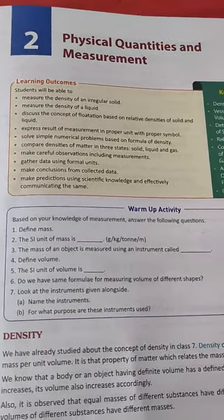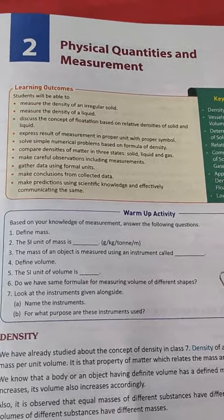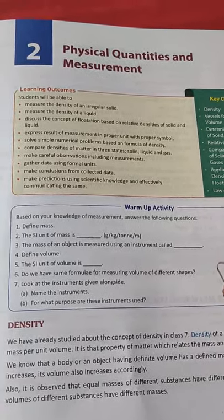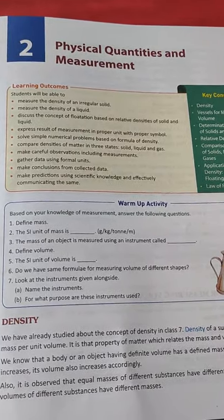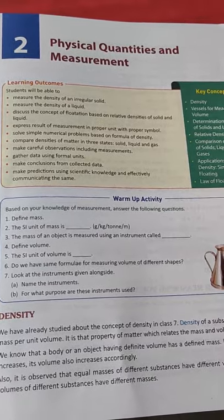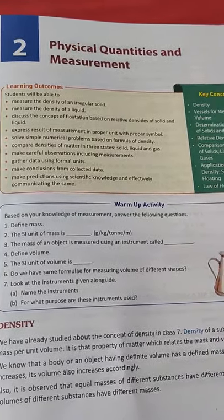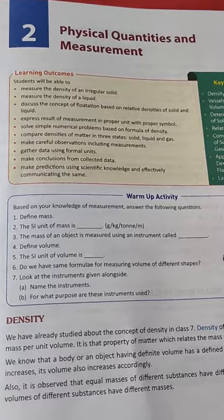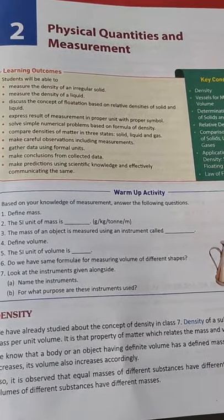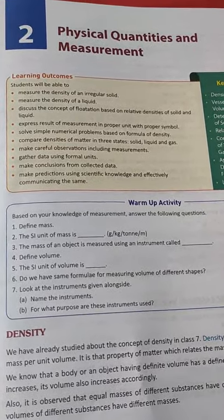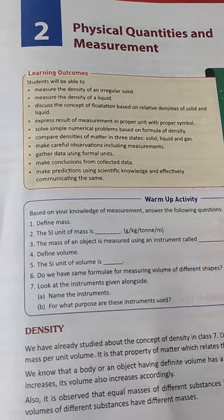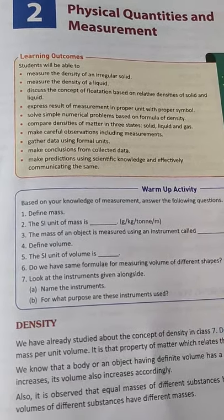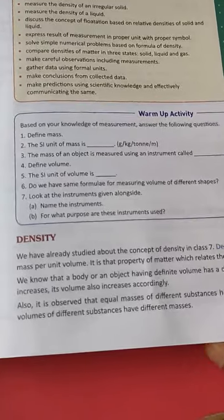Hello students of class 8th. We are learning physics, doing chapter 2 — Physical Quantities and Measurement. In this chapter we will learn about different physical quantities and how to measure them. We have learned the basics in previous classes: physical quantities are those whose measurement can be done, and measurement is the comparison of an unknown quantity with a known quantity. We have different physical quantities like mass, temperature, and time.